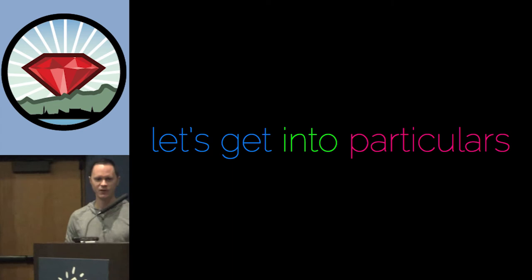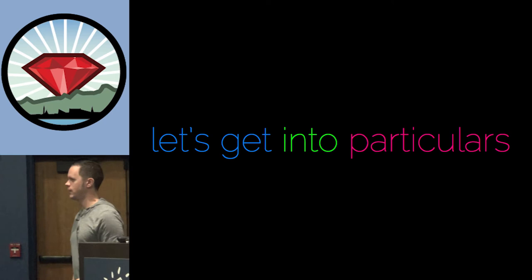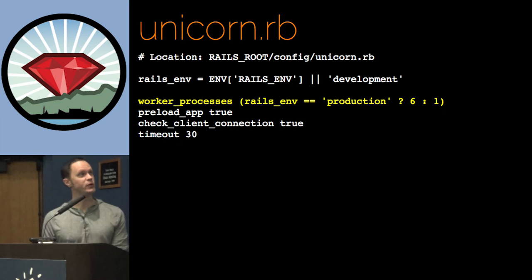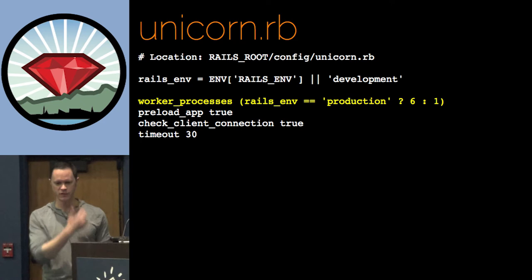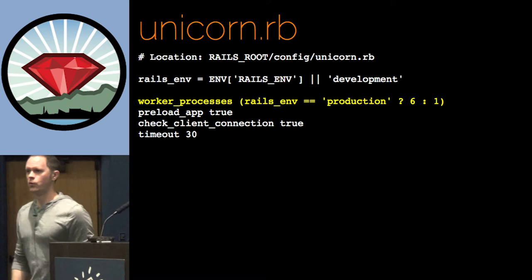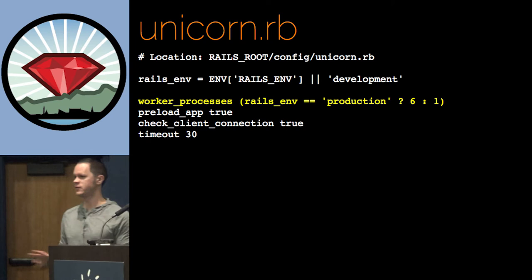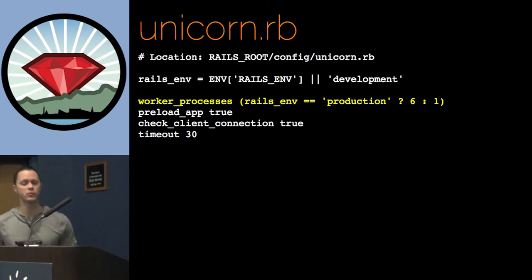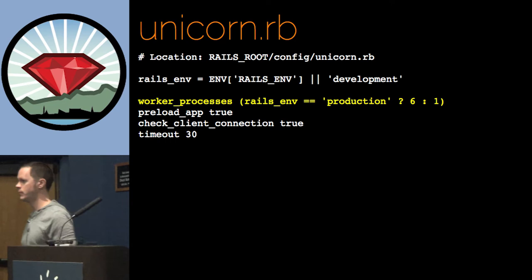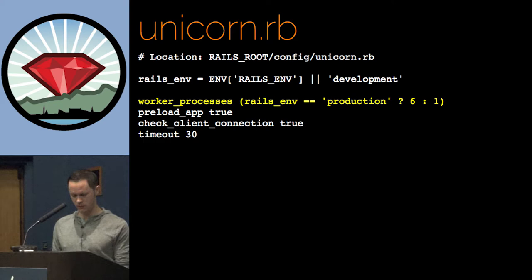Let's get into the particulars of making that happen — let's go through the configuration files and point out the salient bits of how to make it all work together. So our Unicorn configuration file — pretty straightforward, this is kind of stock Unicorn stuff. In our production environment we're spinning up six workers to power the app versus one in development. We're telling Unicorn we want to preload the app, so we want the app to be available when it starts up. We've got a timeout in there.